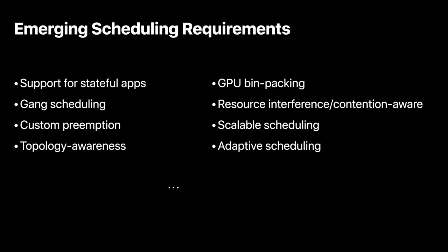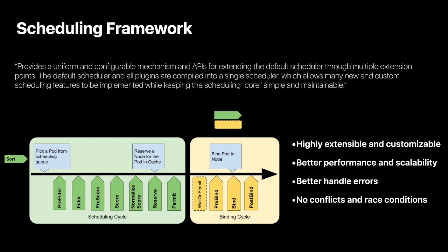Here is just a partial list of the new scheduling features that we see as very important to support today's workloads in Kubernetes clusters. So how do we develop new scheduling features? I'd like to give a quick overview introduction of the scheduling framework, which provides a very powerful and uniform mechanism that enables us to write custom logic to extend and enhance the existing scheduler's scheduling logic and workflow.